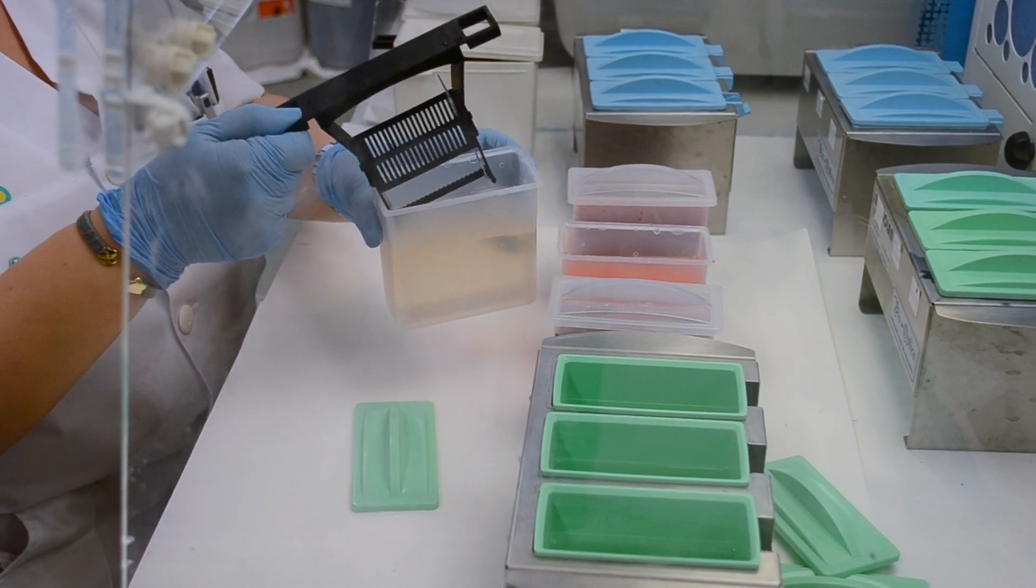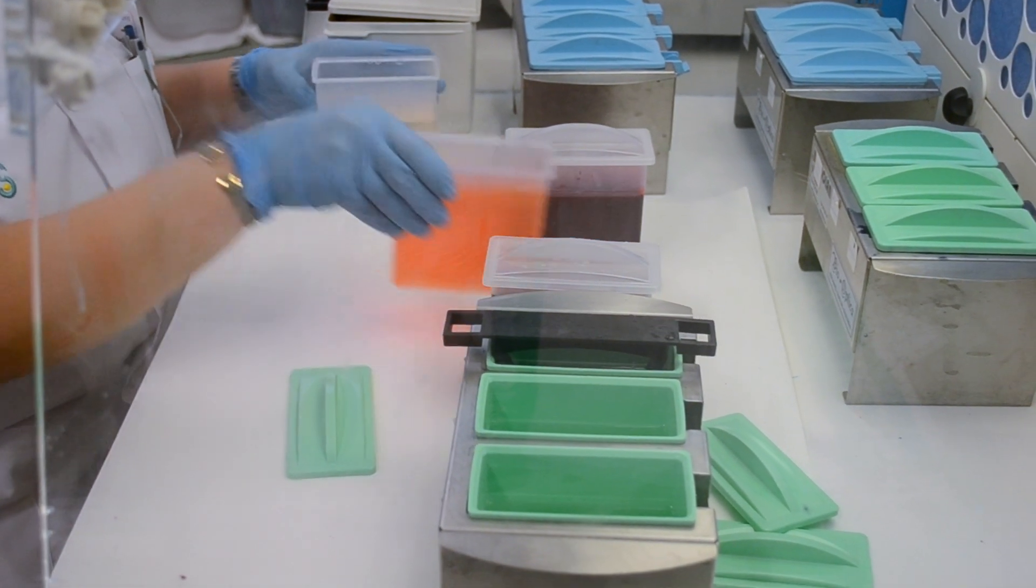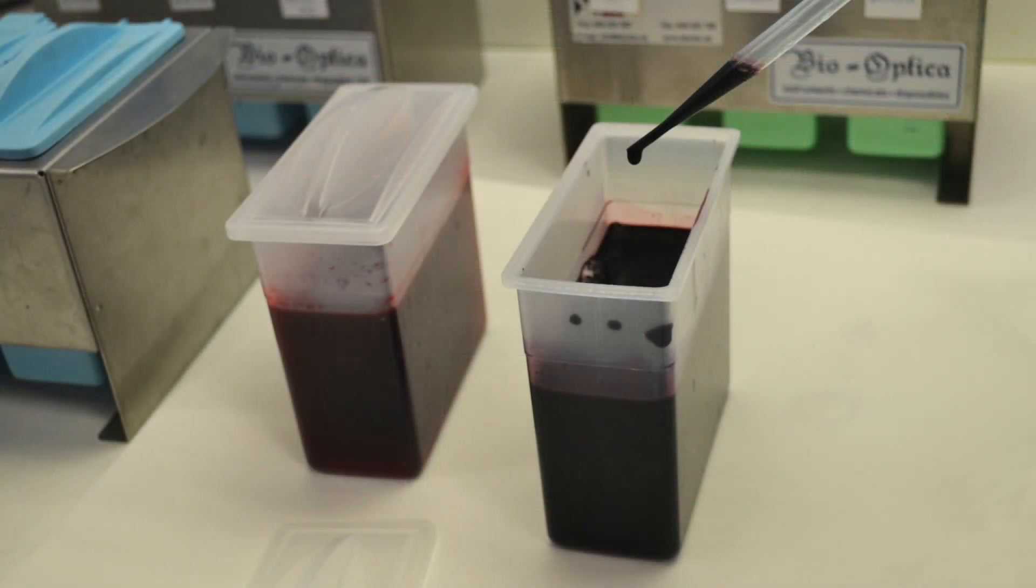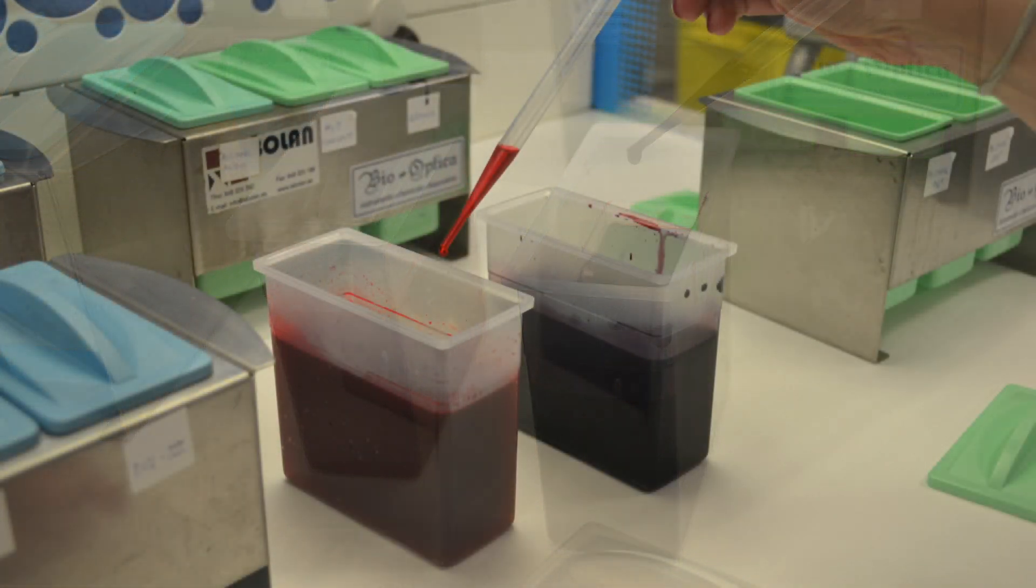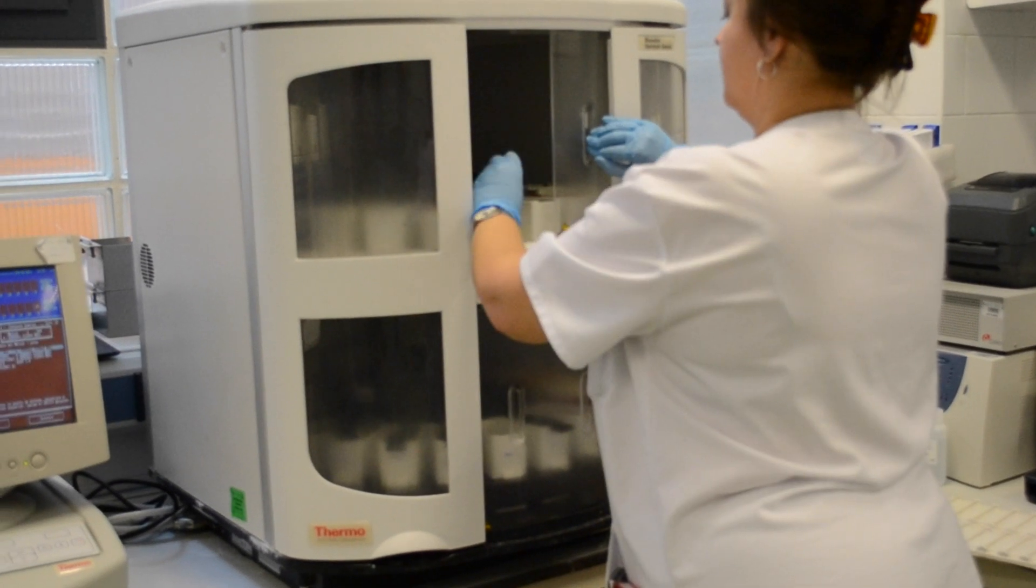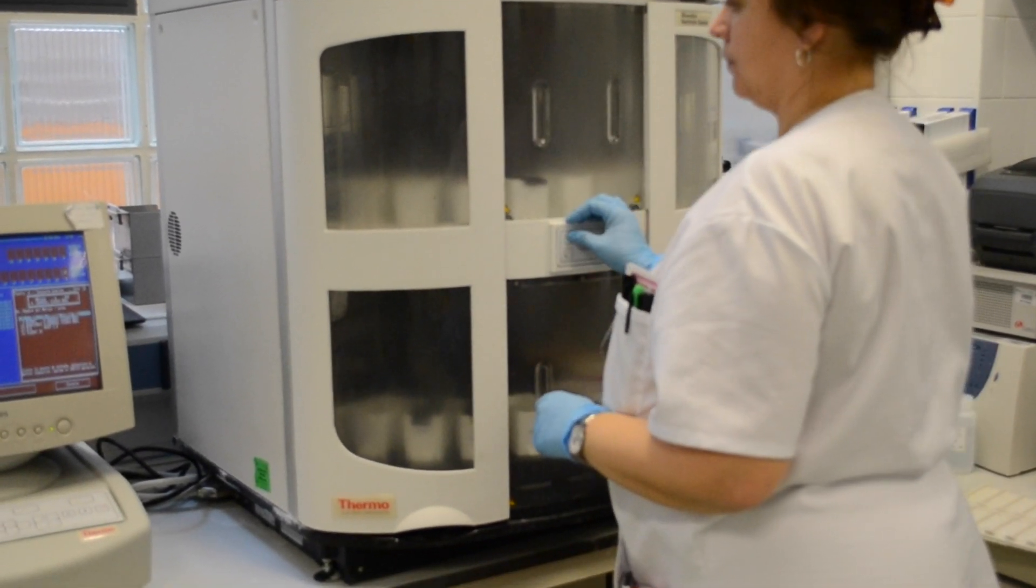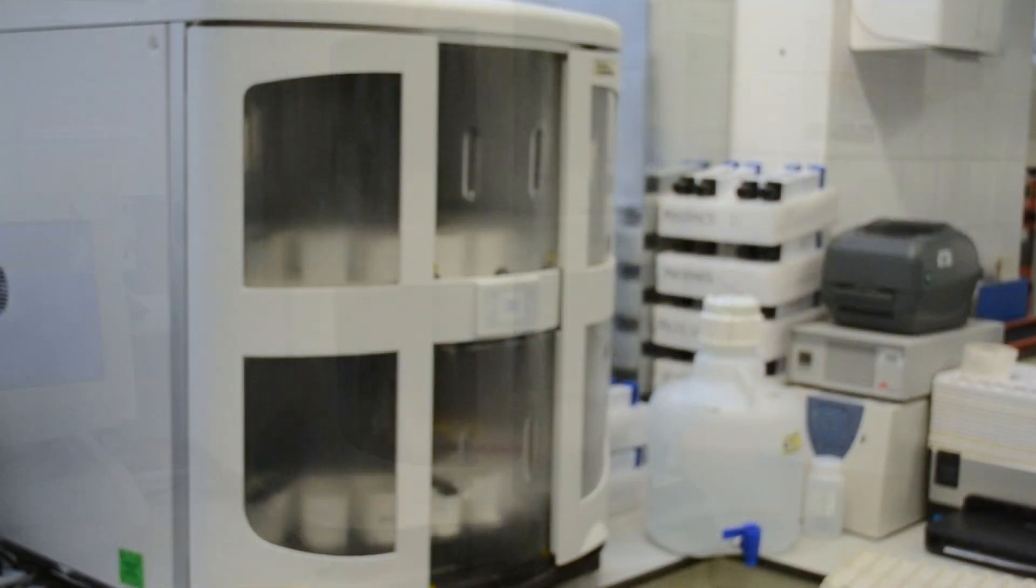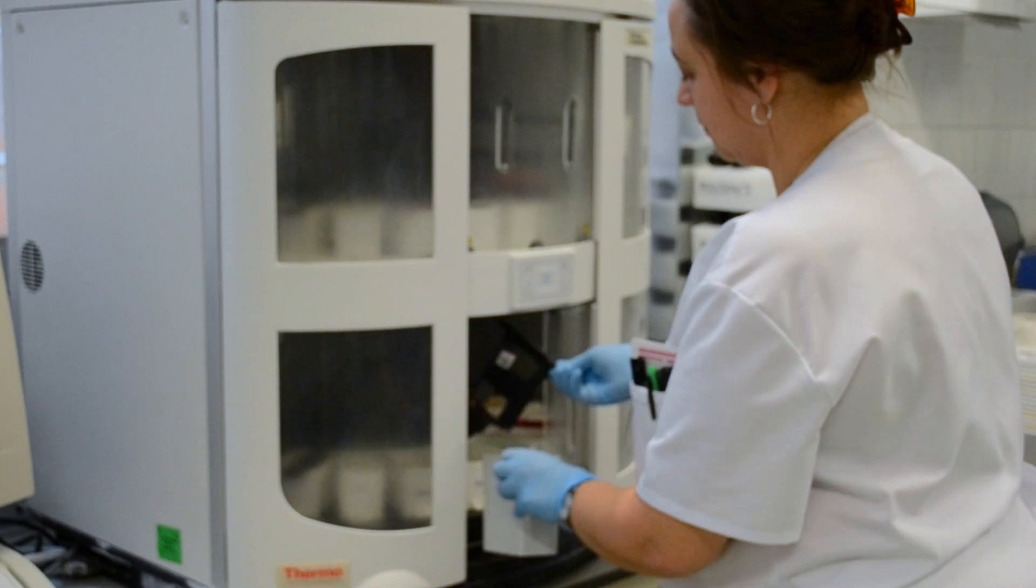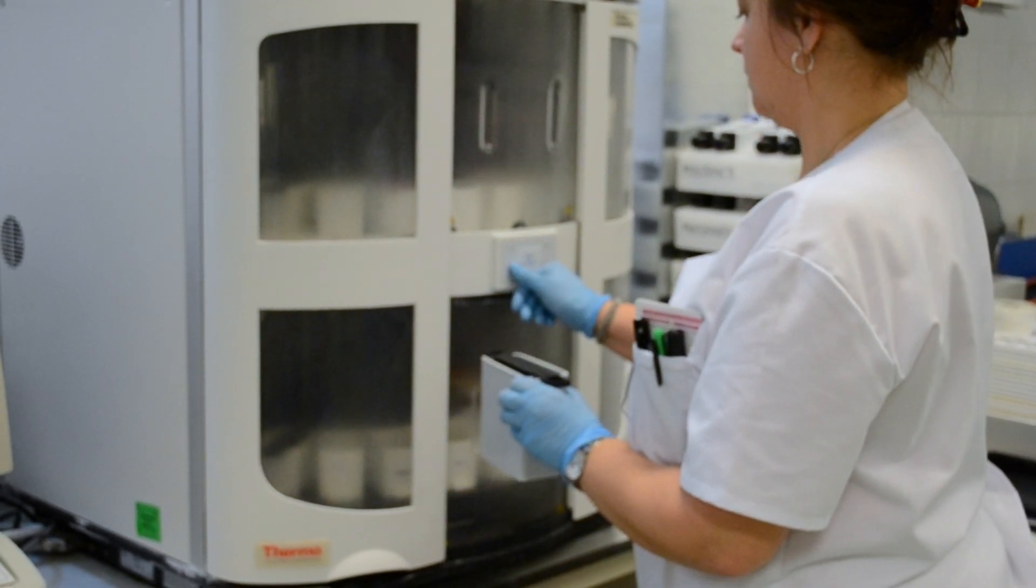The most common stain performed is hematoxylin and eosin, or H&E. Hematoxylin stains the nuclei of cells blue, and eosin stains the cytoplasm pink, revealing cellular morphology of tissues. Because it is so common, there are automated machines like this to reproducibly stain numerous sections with H&E, as well as the previous steps of de-waxing paraffin sections and tissue hydration. The whole process takes about one and a half hours.